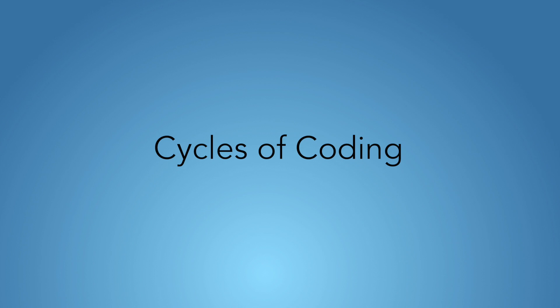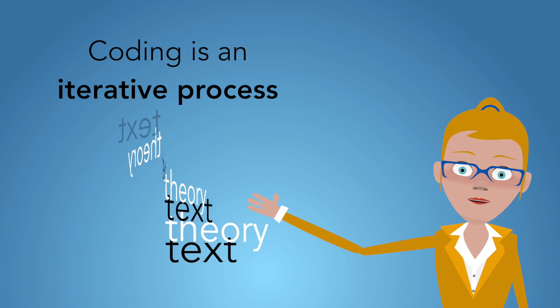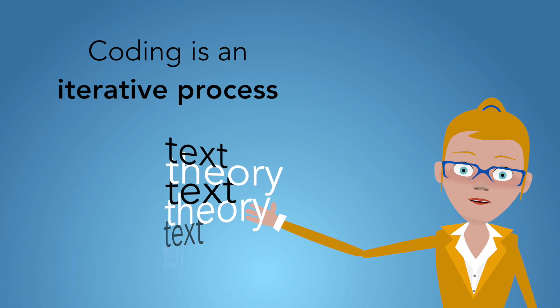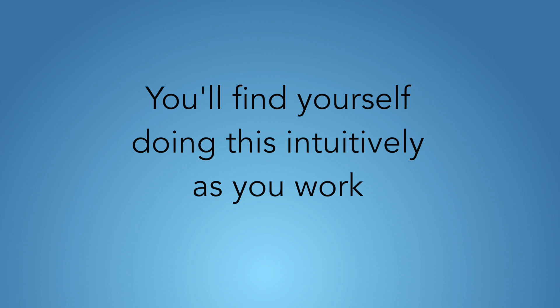This will be a very succinct way to talk about cycles of coding. Generally, we think about coding as an iterative process where you move from the small level to the big level and back to the small level. And you do it often. Even if you're not writing about it in your memos, you tend to do this intuitively.